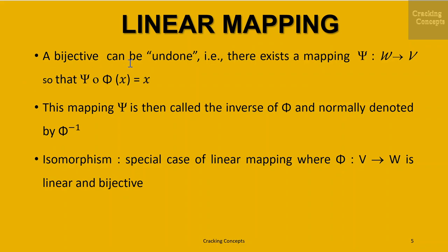Bijective means both injective and surjective. A bijective mapping can be undone — that is, there exists a mapping psi from W to V so that psi of phi of x gives us x. This mapping psi is called the inverse of phi, normally denoted as phi inverse. Isomorphism is a special case of linear mapping where phi from V to W is linear and bijective.